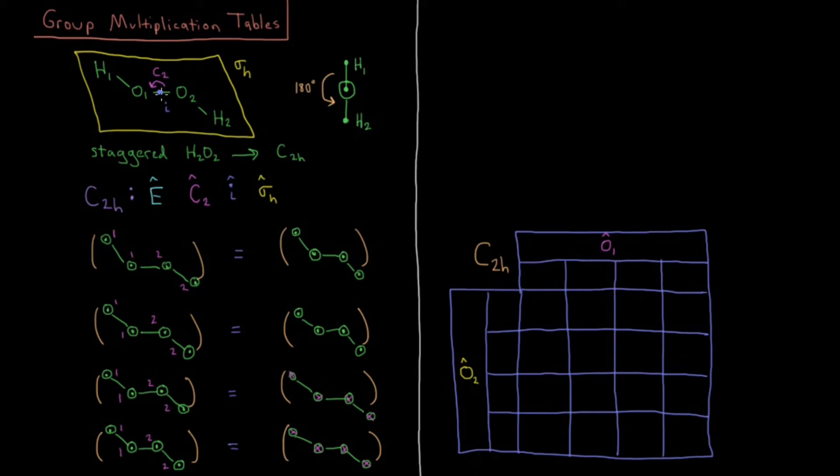I, an inversion center in the middle, through which the atoms invert. And sigma H, a plane which is horizontal perpendicular to the C2 principal axis, as the molecule is planar, as we can see.